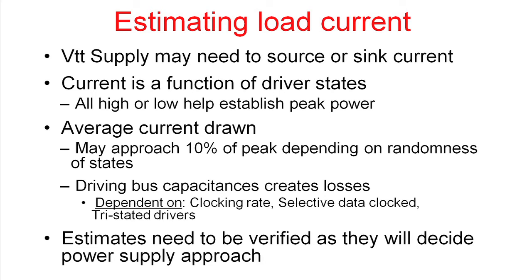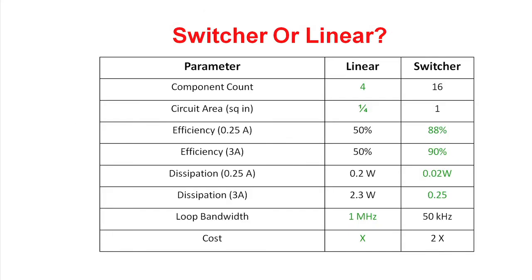Once you have estimated your losses from the randomness of the data and from driving the bus capacitance, you need to verify them, as they will decide your power supply approach. The big question is: do you need a switcher or do you need a linear? When DDR first got popular, it was conventional wisdom just to go with the switcher. The reason was that it was capable of high peak powers you might calculate when considering extreme states, it was efficient, and there was no significant loss associated with it.